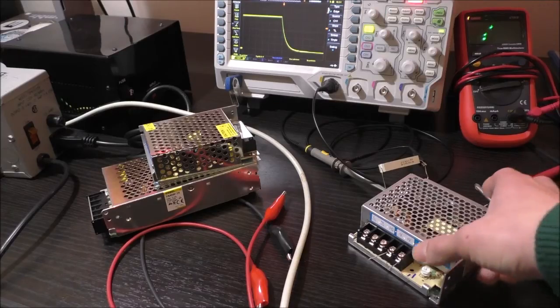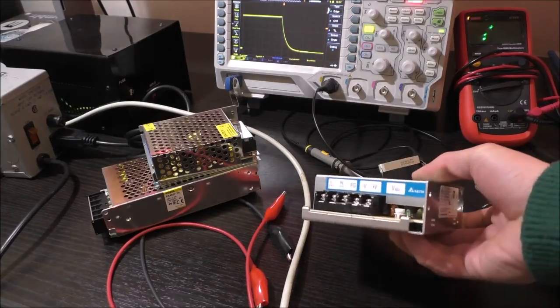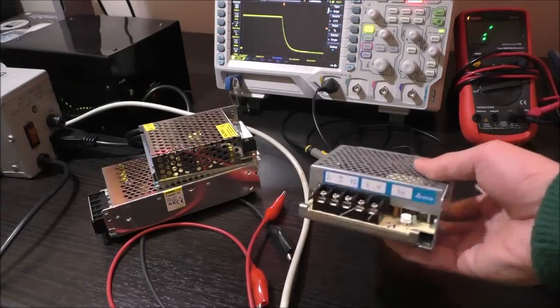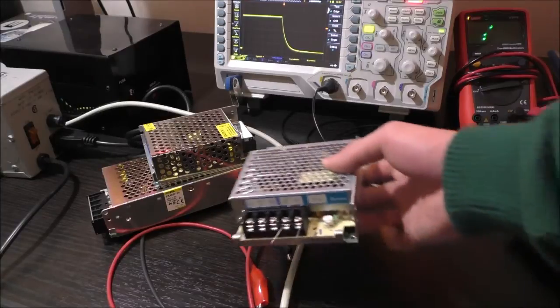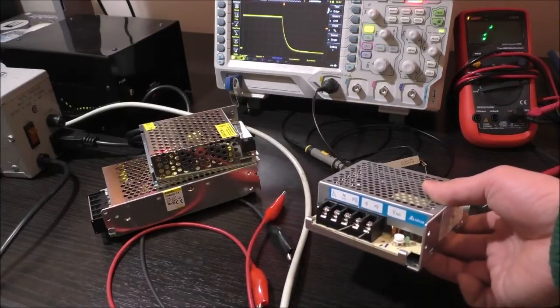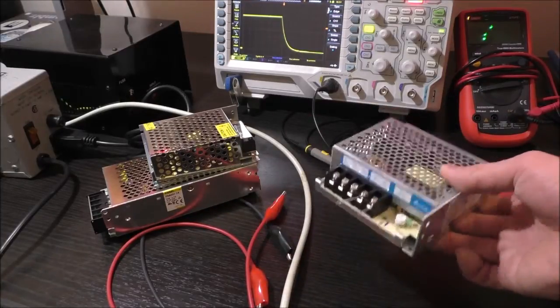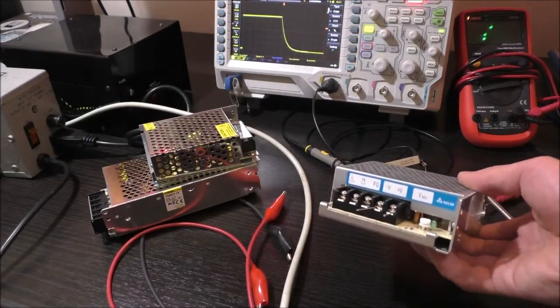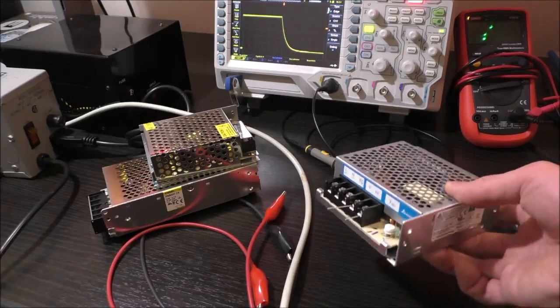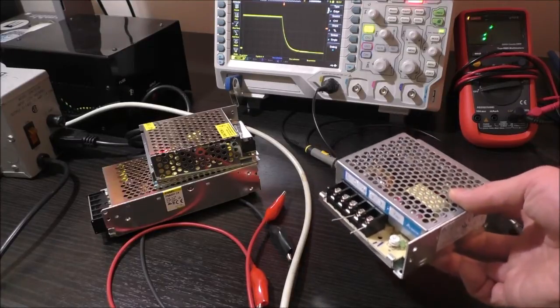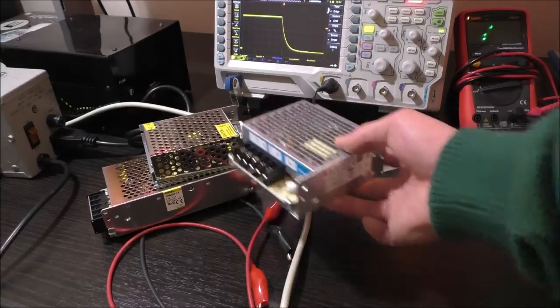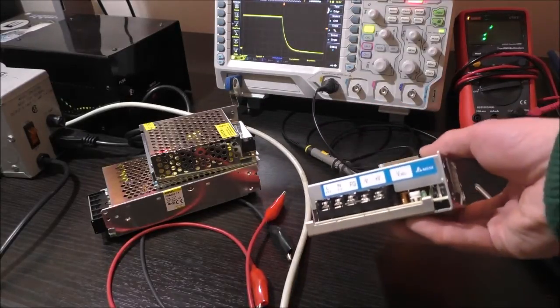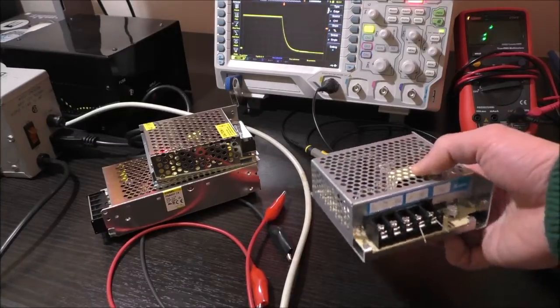And that concludes the review and teardown of the Delta PMT series power supply. As we can see, even though this power supply is $18, just about twice the price of the cheap Chinese power supply, the internal construction has been surprisingly nice. It's used good quality components. And we've also seen that the performance of this Delta power supply has been much better than both the COSEL and the Chinese power supply. So I would definitely recommend and will be using these Delta power supplies in the future for my projects.